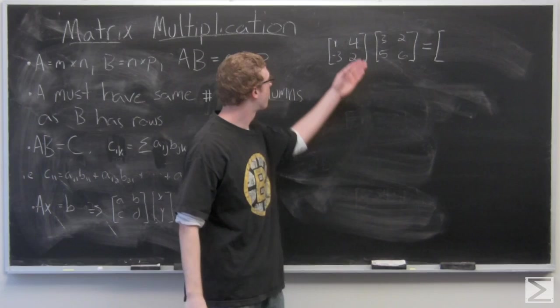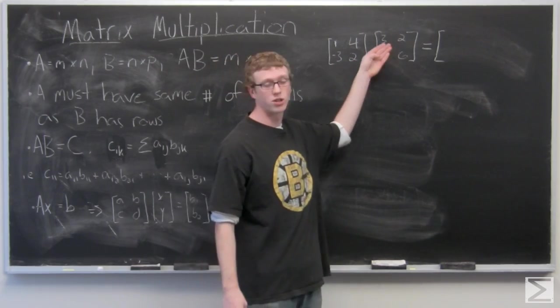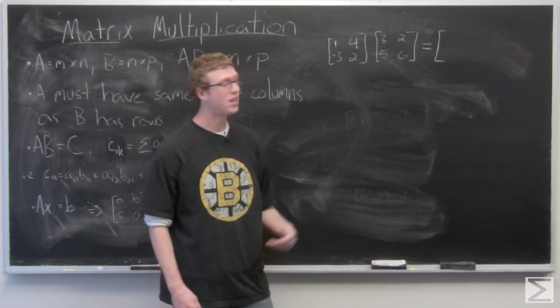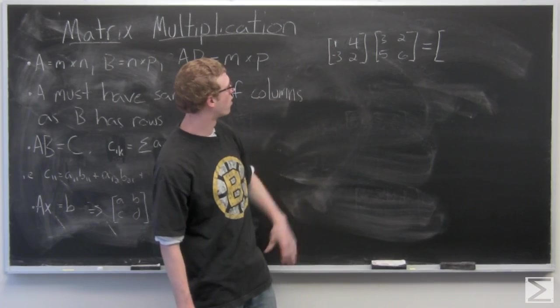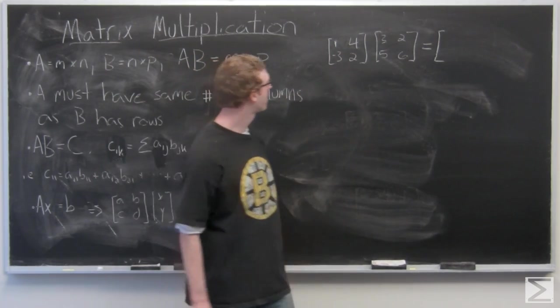So we have a matrix 1, 4, negative 3, 2 and a matrix 3, 2, 5, 6. Now we're going to multiply 1 times 3 and add 4 times 5.